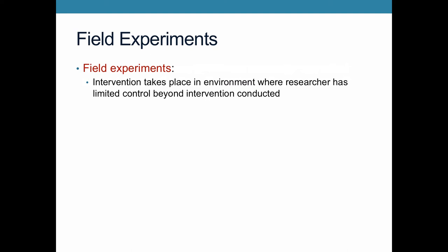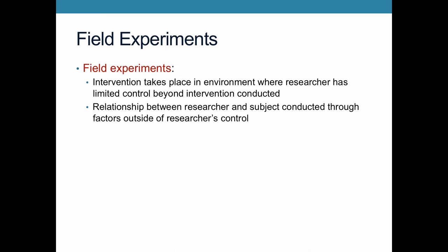In contrast to lab experiments, where the researcher is able to entirely control everything and do it in a very narrow period of time, a field experiment will often take place over a prolonged period of time. There'll be a lot of potential for things to go a little haywire along the way, but it's closer to what we would experience in the real world. The relationship between the researcher and the subject is conducted through factors outside of the researcher's control — the real world intervenes, and they're not able to perfectly ensure that the treatment is administered exactly the same way as the control group experiences their placebo.